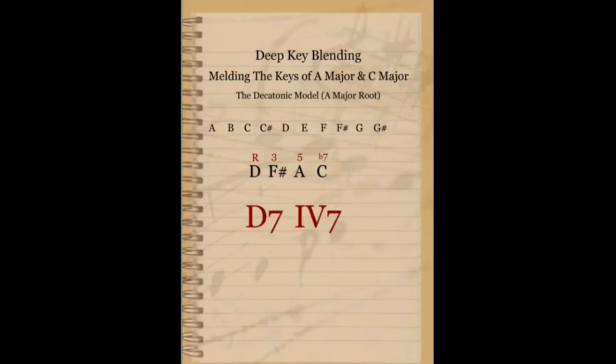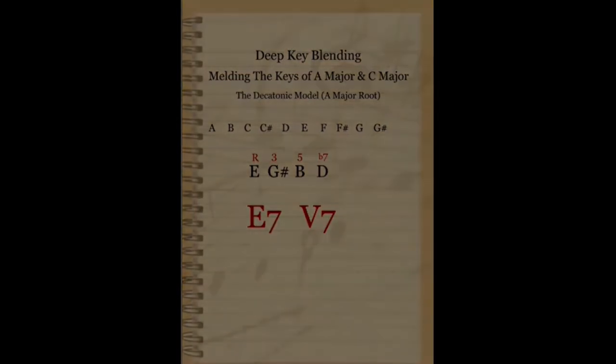Now, to complete our situation, we need the E7 chord to complete the one, four, and five dominant seventh chords in a standard 12 bar blues. Let's see if we get it. And there we have it. There's much more to this, but I think we've made a good start here.